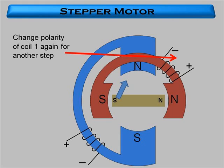To continue the motion, the polarity is simply changed on each winding in turn.